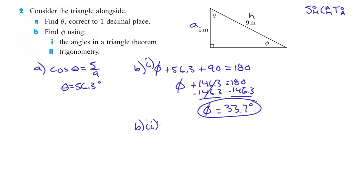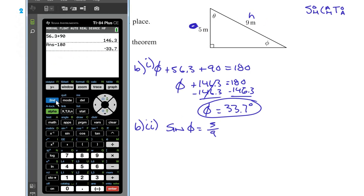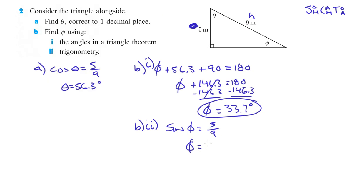Part two says find it using trig. From phi, this side is now the opposite instead of the adjacent. So we use opposite and hypotenuse — that's sine. Sine of phi equals 5 over 9. We do second sine of 5 divided by 9, and we get 33.7 — exactly the same as before. Honestly, I think this way is faster, but either way works.